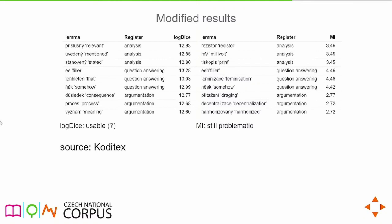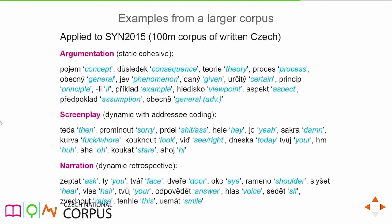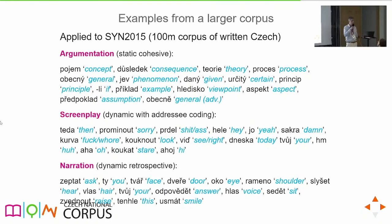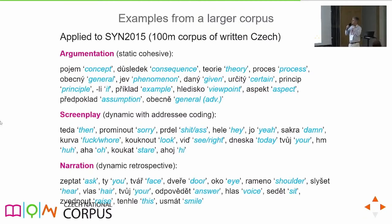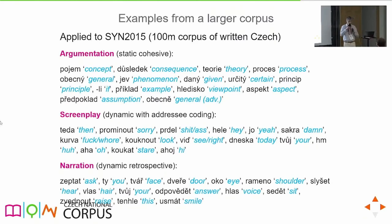The problem with Coditex is that it's quite small — only 10 million words. Let's apply the multidimensional model to a larger corpus — the 2015 corpus with 100 million words, though only written Czech with no spoken or online communication. Using LogDice on the larger corpus, for argumentation (the static cohesive register), the most associated words include: concept, consequence, theory, process, general, phenomenon, given, certain, principle, if, example, viewpoint, aspect, assumption. I did not filter this list at all — this is just what came out from the corpus — and I think it is pretty convincing.